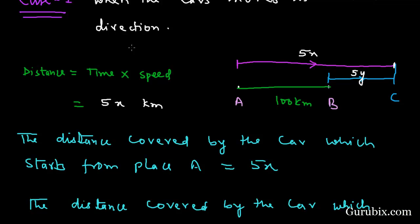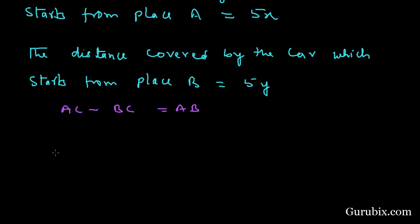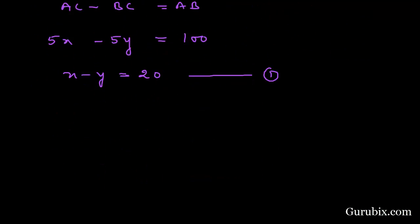From the diagram, if we subtract BC from AC we get AB. This means if we subtract 5y from 5x we get 100 kilometers. Dividing both sides by 5, we get x minus y equals 20. This is our equation number one.